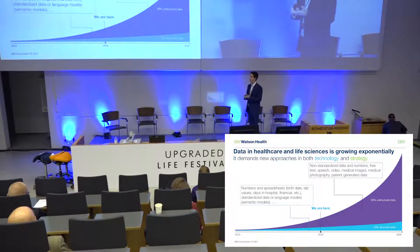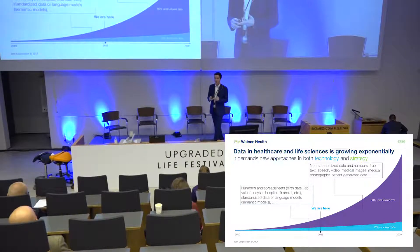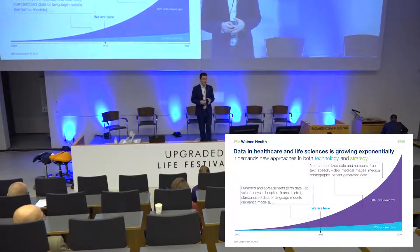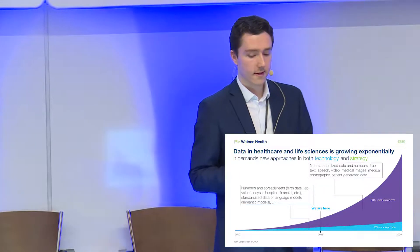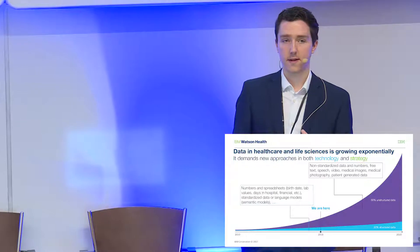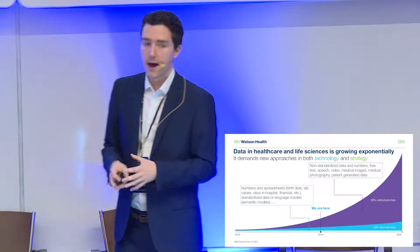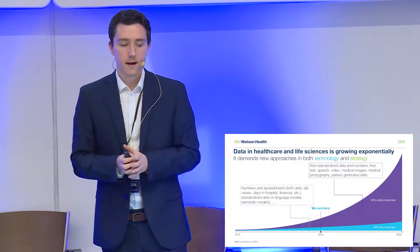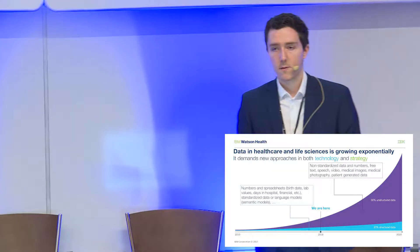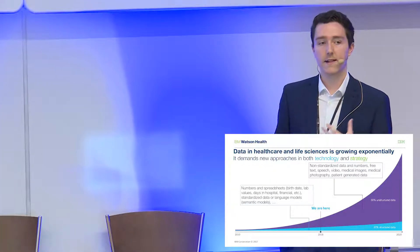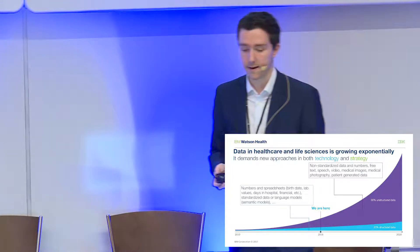Watson can do three things: it can understand, reason, and learn, much like human cognition can. When I say understand, there's something called natural language processing that exists within Watson — if we're talking about free text. It can understand not only the keywords within scientific literature, but it can understand the ways in which they relate to one another, so it can understand context when looking at a given text.